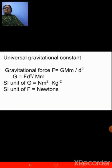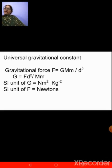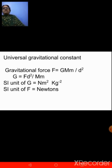First, universal gravitational constant. You all know the universal law of gravitation — every object in the universe attracts every other object with a force which is directly proportional to the product of their masses and inversely proportional to the square of the distance between them.